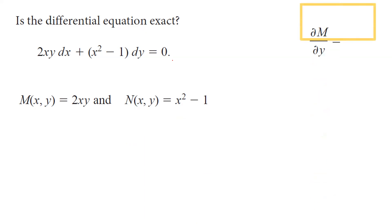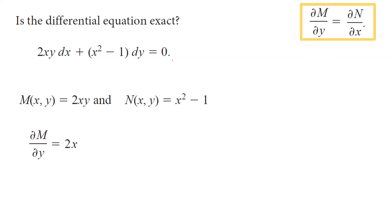Our goal is to check whether the partial derivative of M with respect to y equals the partial derivative of N with respect to x. The partial derivative of M with respect to y is 2x, because when taking the derivative of M with respect to y, x acts like a constant — so 2x is a constant and the partial derivative of y disappears, giving 2x.